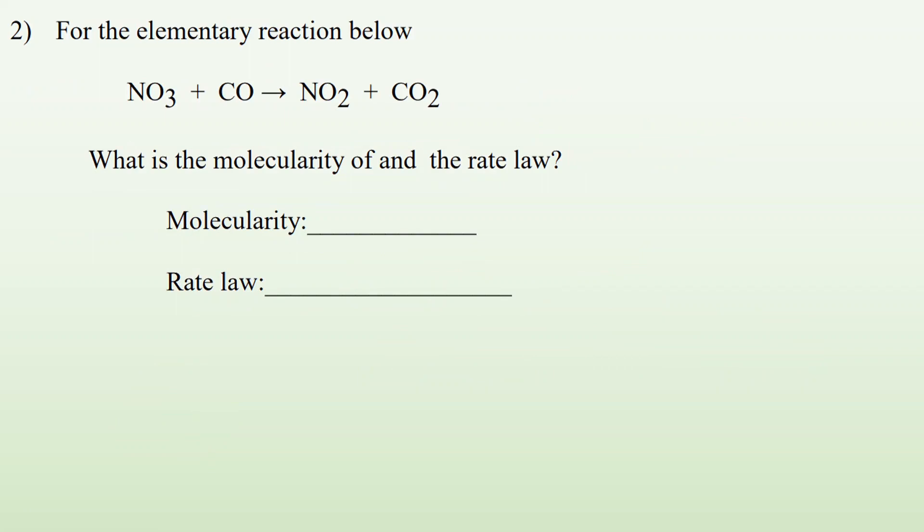Number two, for the elementary reaction below, what is the molecularity and the rate law? Molecularity is basically how many molecules are involved in that elementary step. If I take a look, there's one, two. So molecularity is what we call bimolecular. Bi means two, bicycle, you got two tires. And the rate law would be, the rate equals, when we're dealing with elementary reactions, the coefficient in front becomes the exponent in our rate law. So the rate law equals K times the concentration of NO3 to the first power times the concentration of CO to the first power as well because it is an elementary reaction.